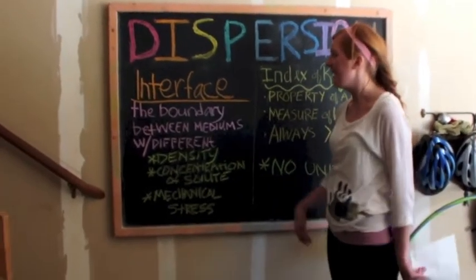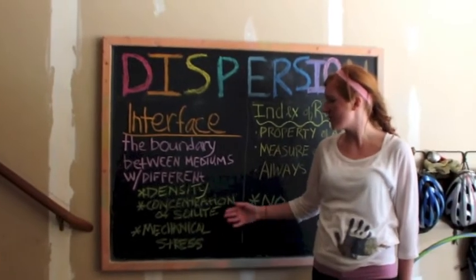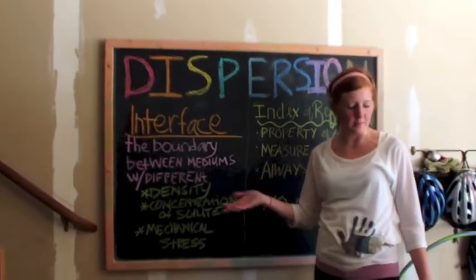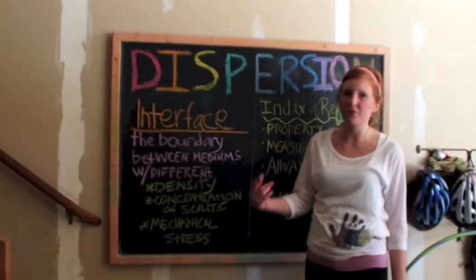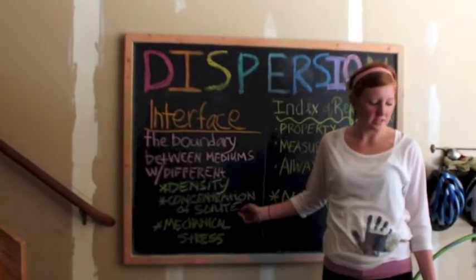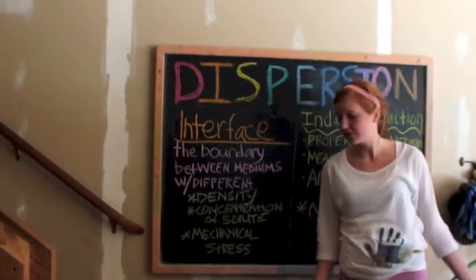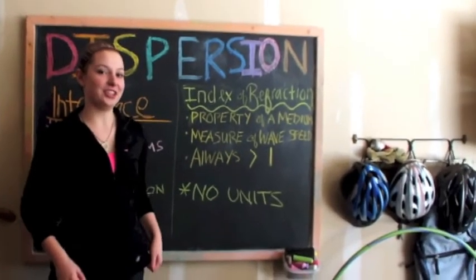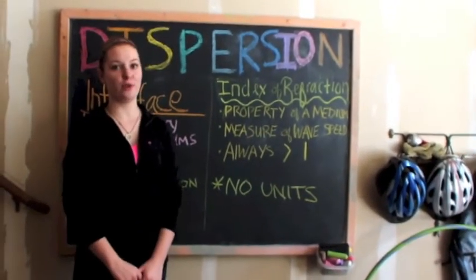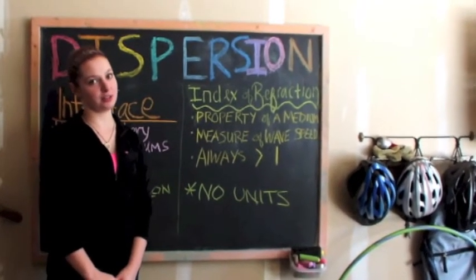Interphase is the boundary between mediums with different density, concentration of solute, and mechanical stress. Density would be an example of different temperatures which cause different densities. Concentration of solute would be like salinity, for example. Mechanical stress is like air pressure. The index of refraction is a property of a medium and a measure of wave speed — it is always greater than 1 and never has any units.